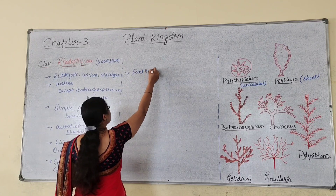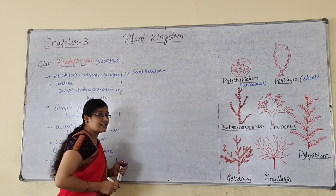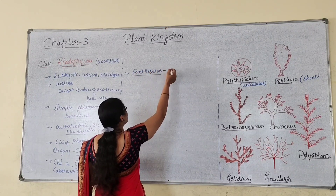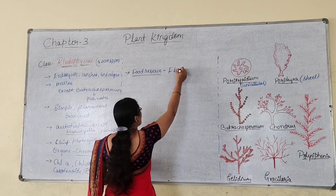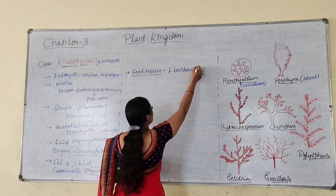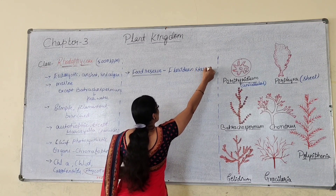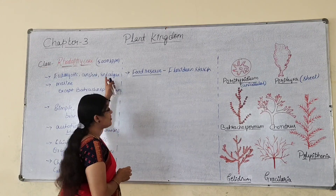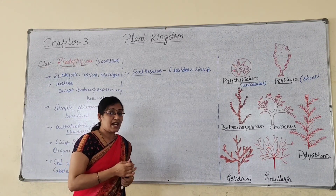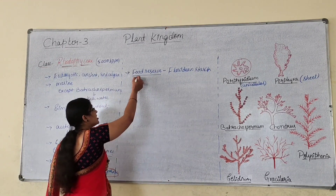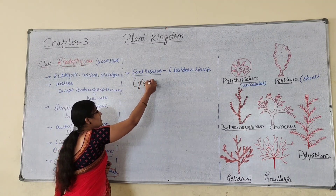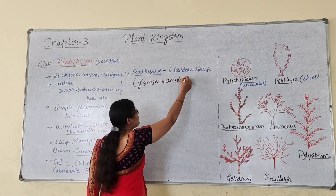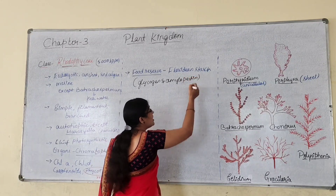The reserve food material, or food reserve, in case of rhodophycean members is floridean starch. This floridean starch is very much similar to glycogen and amylopectin in their constituents.